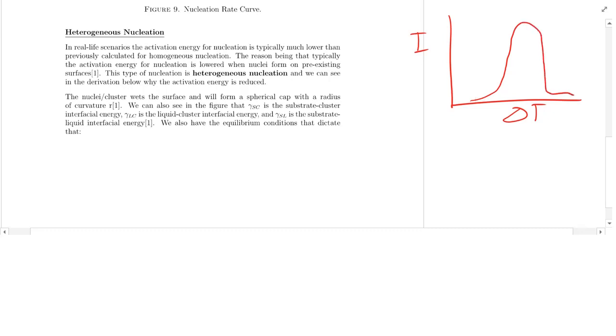Where on this side of the curve here, we are at delta T is large, so our temperature is really, really low. So here, delta G R dominates. Nucleation dominates on this side.